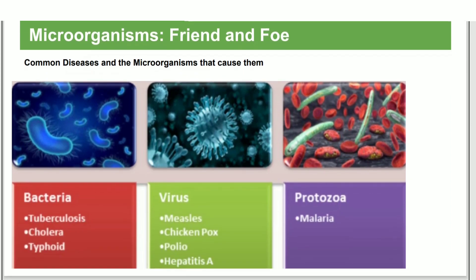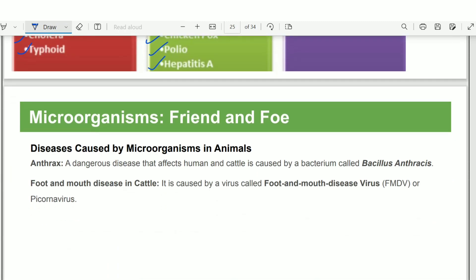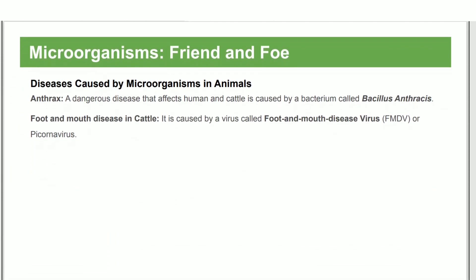Bacteria cause diseases like tuberculosis, cholera, and typhoid. Viruses cause measles, chickenpox, and hepatitis. Protozoa cause malaria. Microorganisms also cause diseases in animals — for example, anthrax is a disease caused in cattle by bacteria.